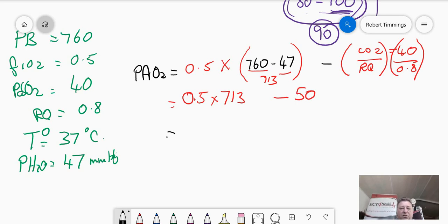Now we've got 0.5 multiplied by 713. So that gives us 356, somewhere around there. Minus the 50, gives me a value that is just shy of 300.